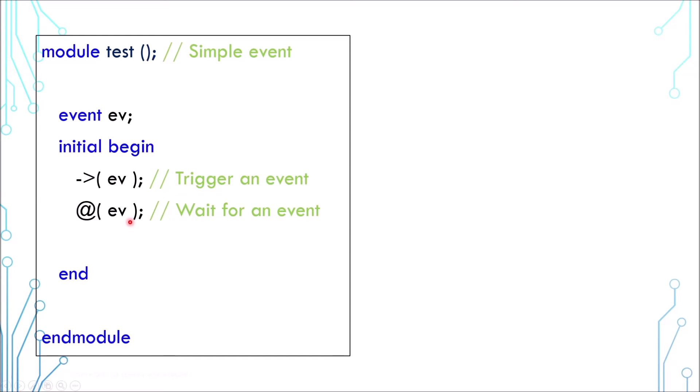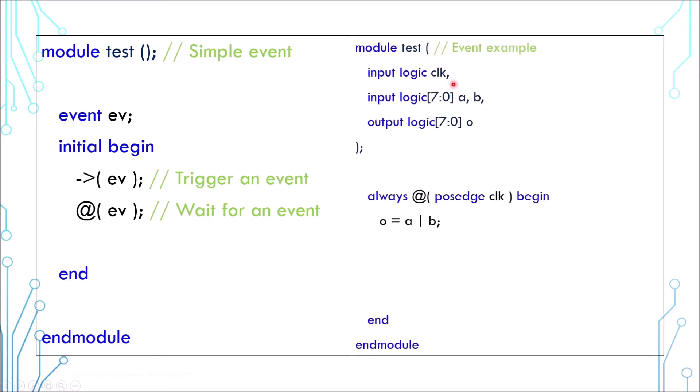If you look at this example, it has a clock, two inputs a and b, and one output o. O simply takes the result of a OR b on every positive edge of clock. Let's say we are interested in the case when either a or b is all ones. You can create an event for that matter.